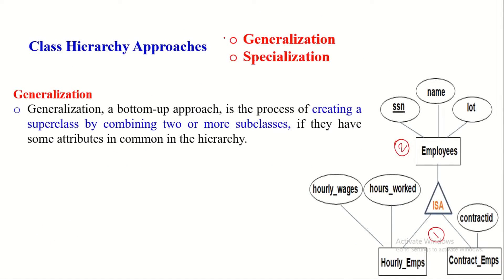Let us now discuss the generalization and specialization approaches applicable in the class hierarchy concept. Generalization is the process of creating a superclass by combining two or more subclasses if they share some common attributes in the hierarchy. Since this process starts from the subclass and creates a superclass, it is known as the bottom-up approach.